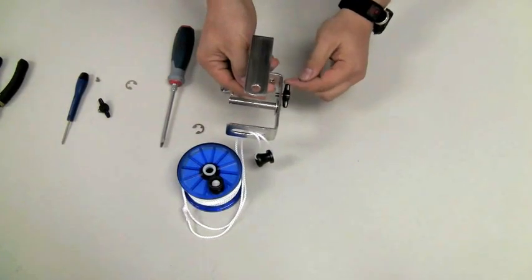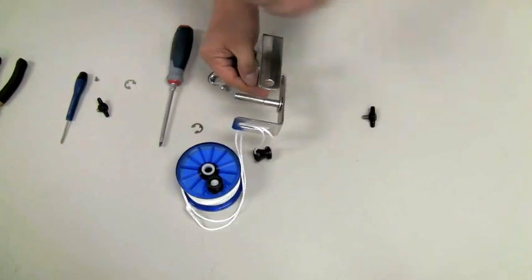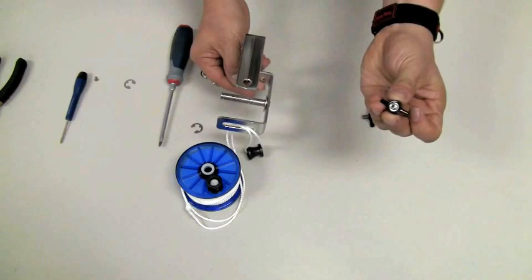Next, remove the existing lock down screw from the frame of the reel and replace it with the new lock down screw where the center of the screw has been drilled and tapped.